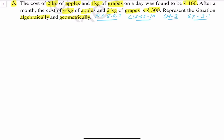So basically, we will make algebraic equations and secondly we will represent it in the graph and geometrically solve it. First of all, we have to talk about apples and grapes. We have to assume the price of apples and grapes in the form of x and y.